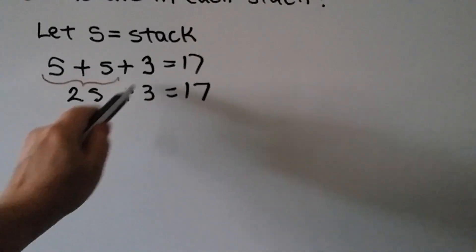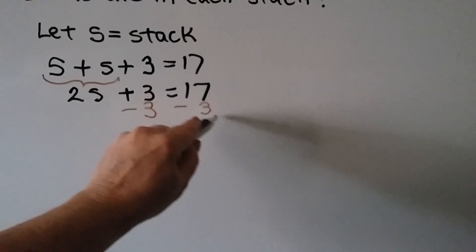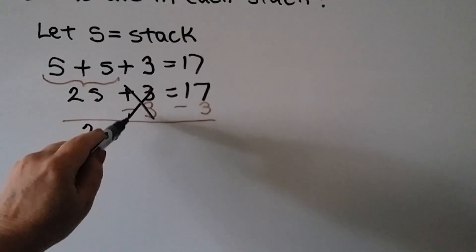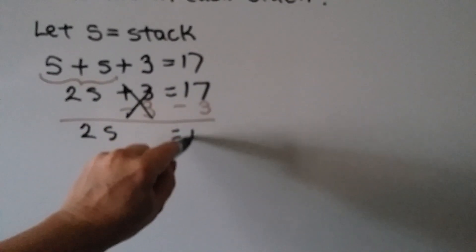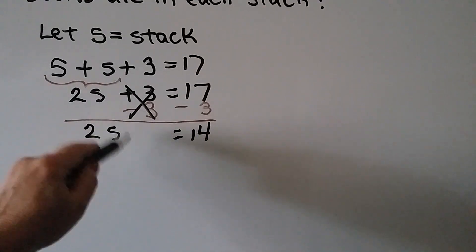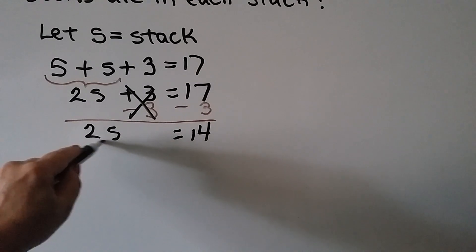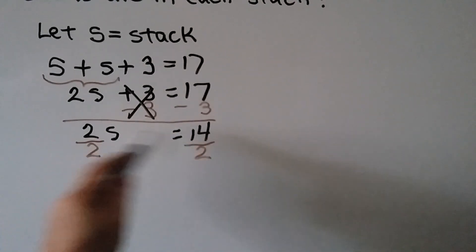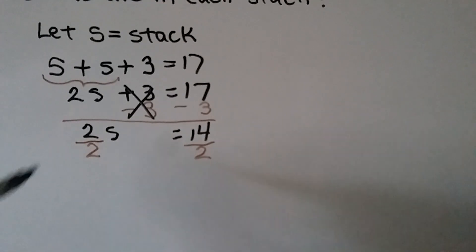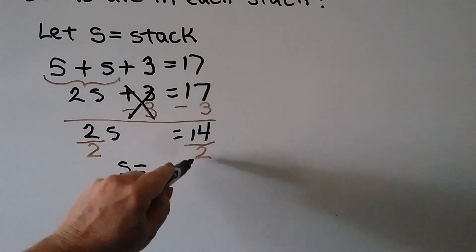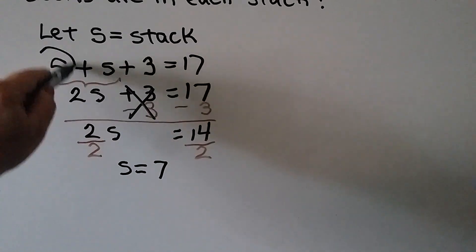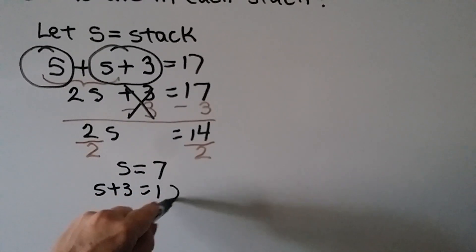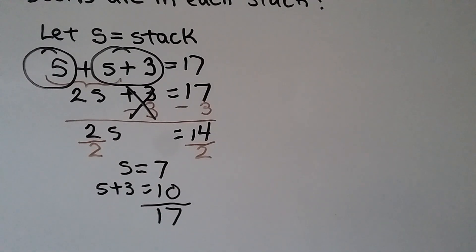Now we can make a zero pair with this three and take away the three from each side of the equal sign. That's going to give us two s. We canceled that out: plus three minus three is equal to 14. Because this means multiplication — two times some number s — the inverse operation would be division. So we divide by two to isolate s on both sides of the equal sign. That gives us one s is equal to 7. So if s is equal to 7, then s plus 3 is equal to 10. And 7 plus 10 is 17, so we know we did it correctly.